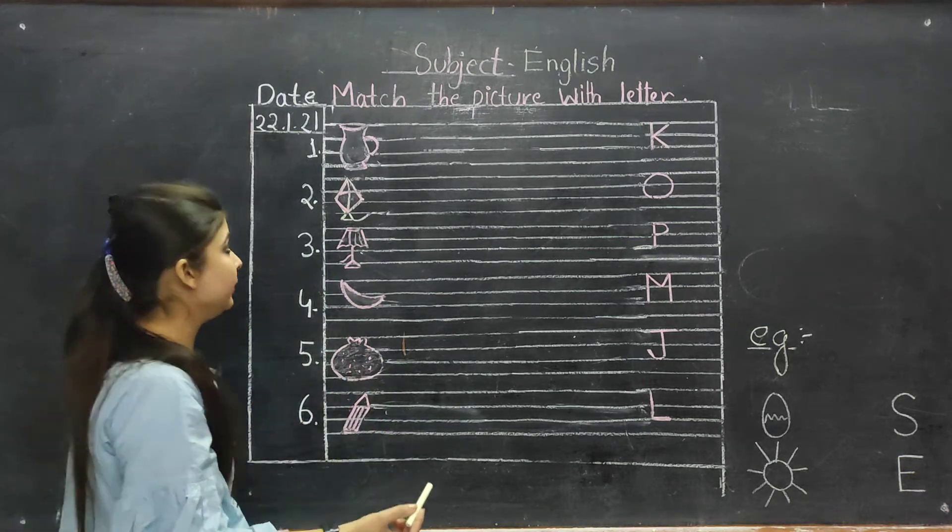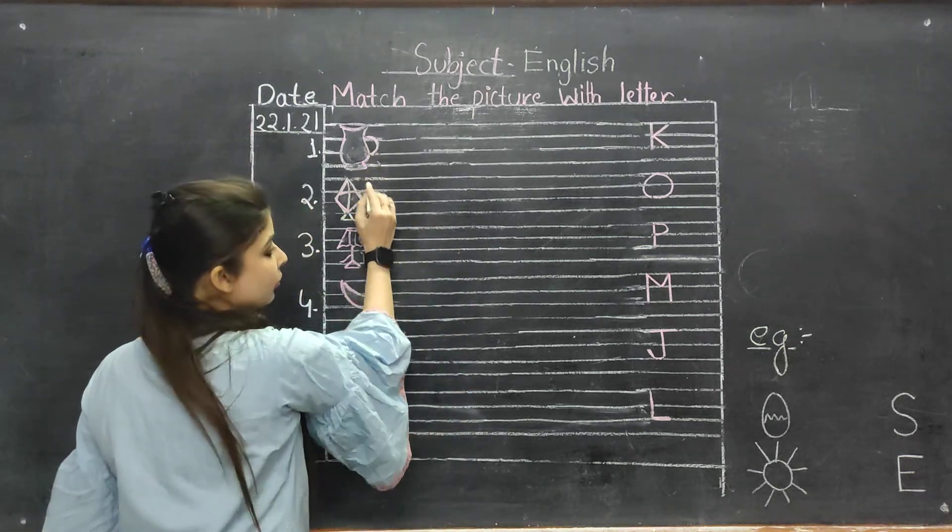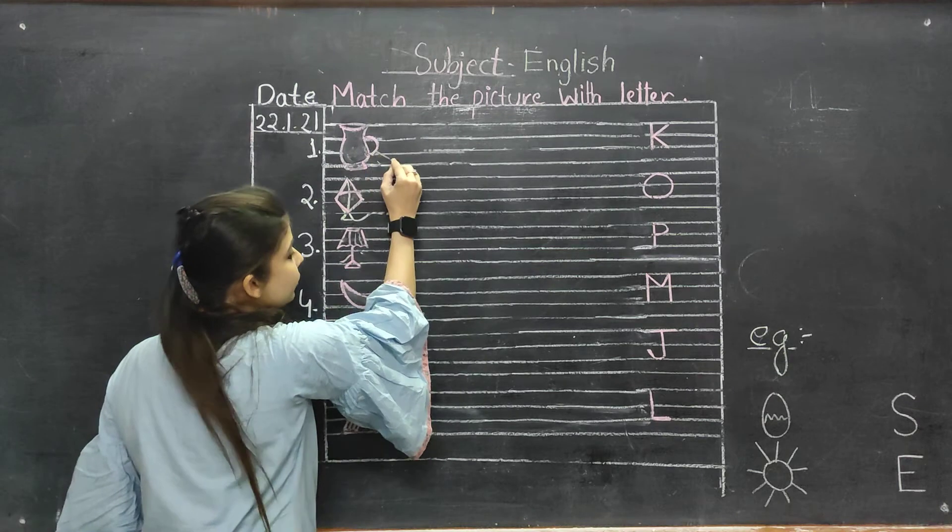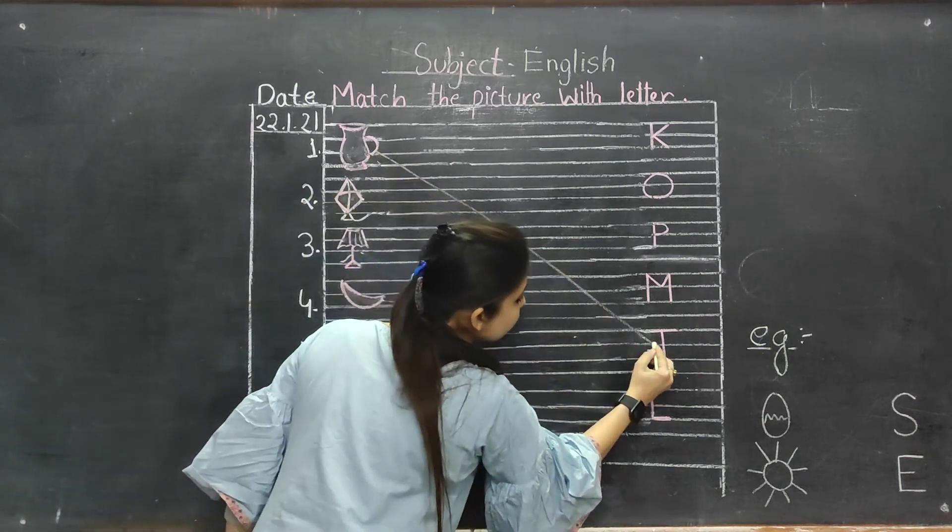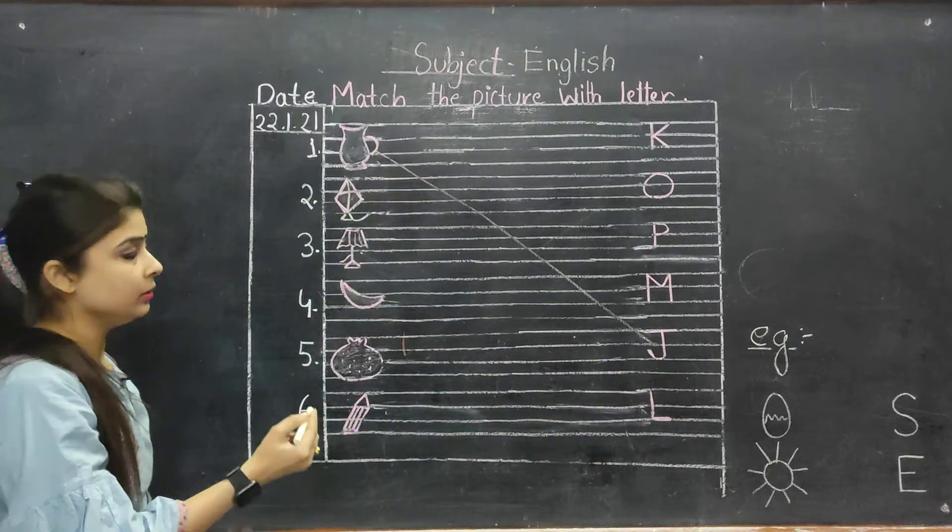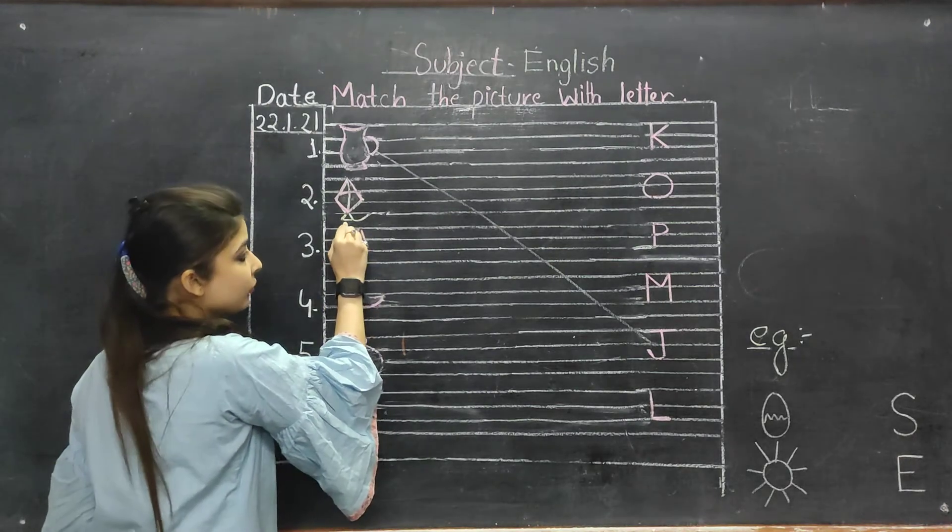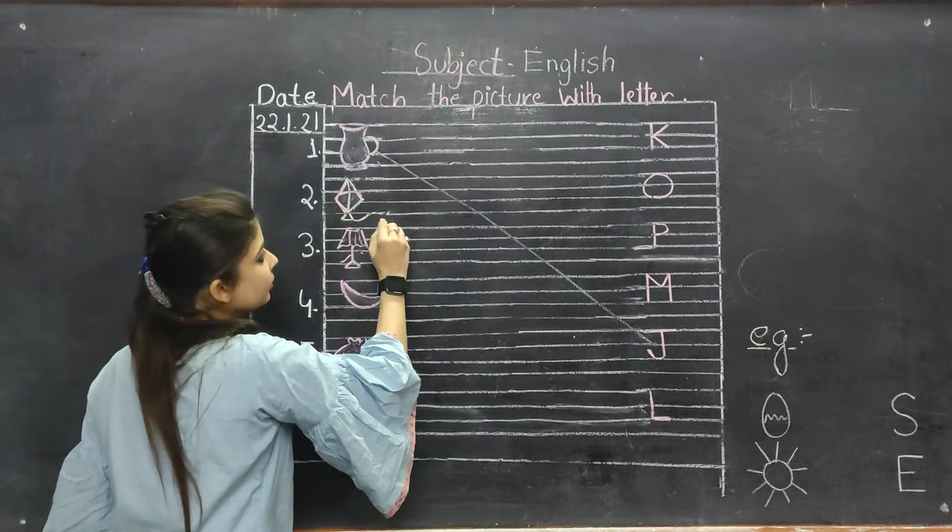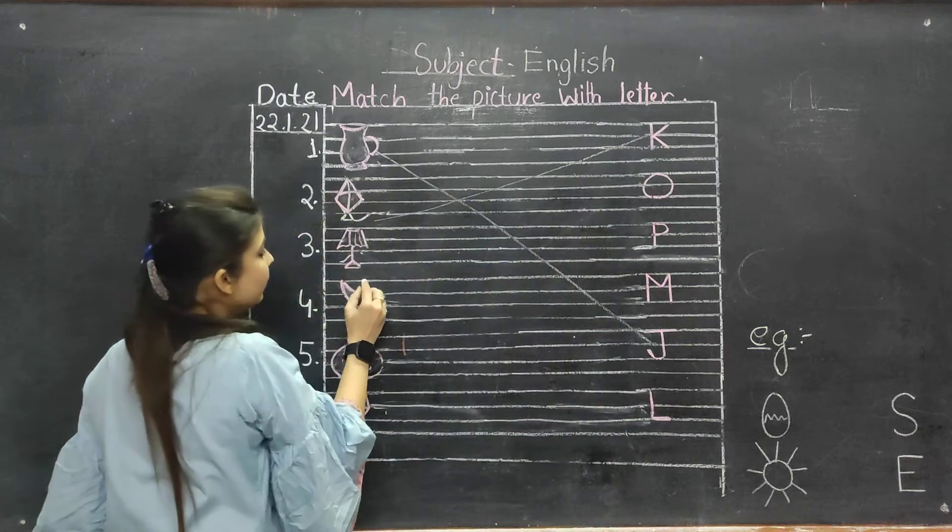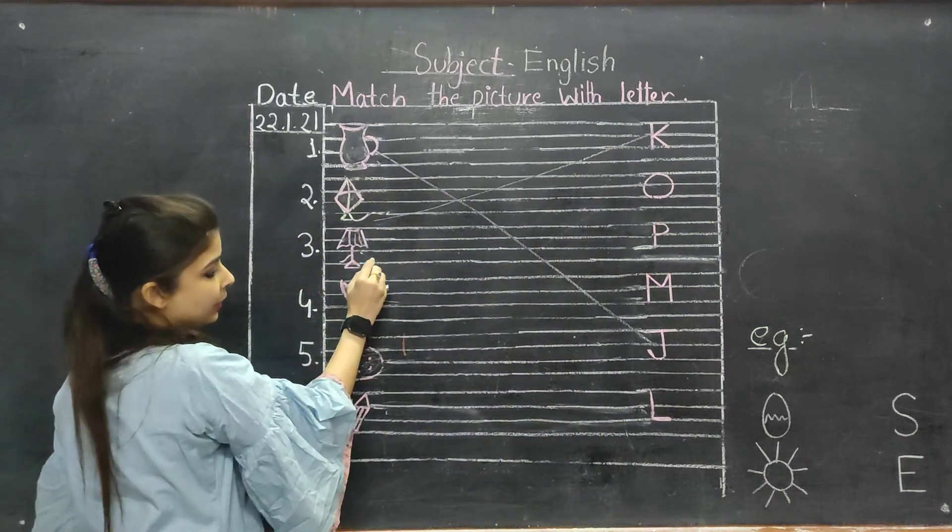Like this is the picture of jug and match it with the alphabet J. J is for jug. This is a picture of kite, K for kite. This is a picture of lamp, L for lamp.